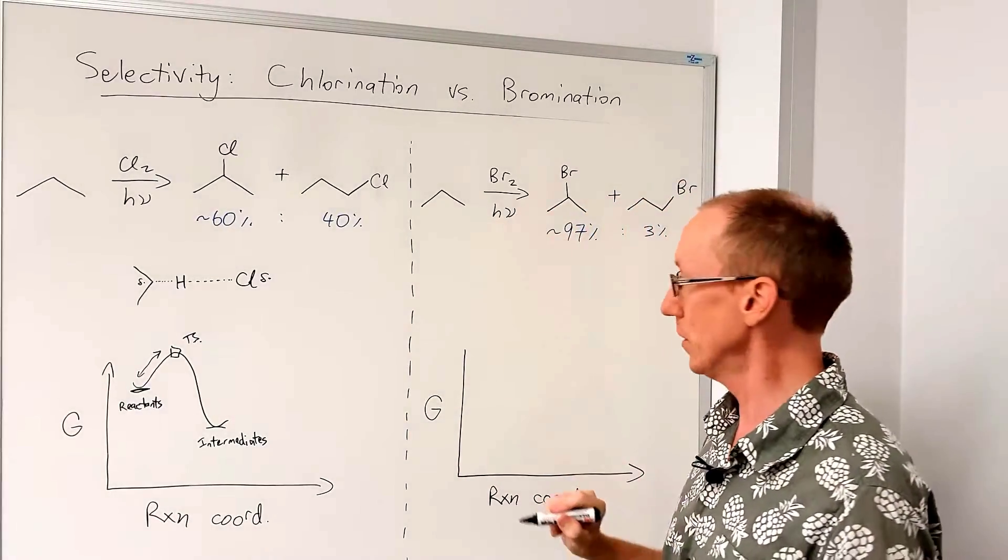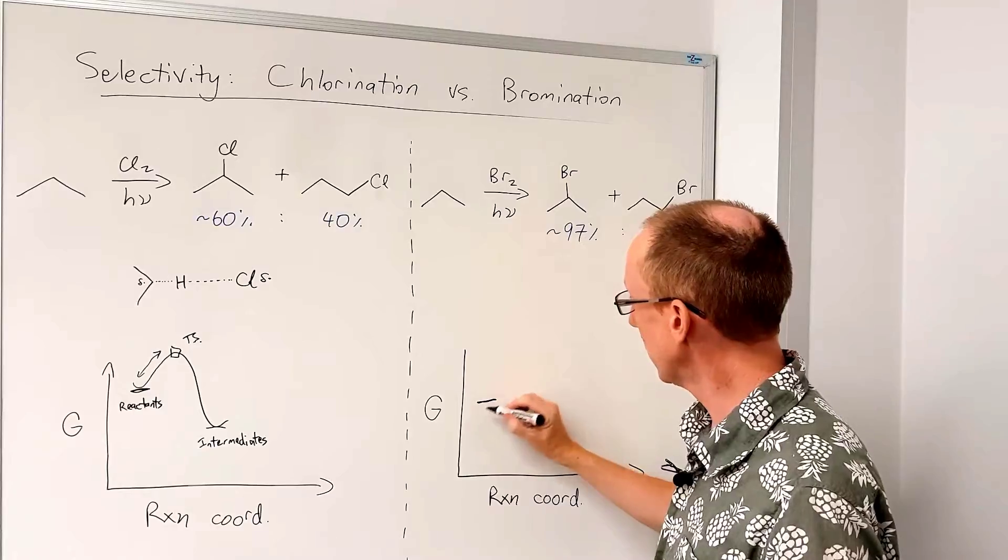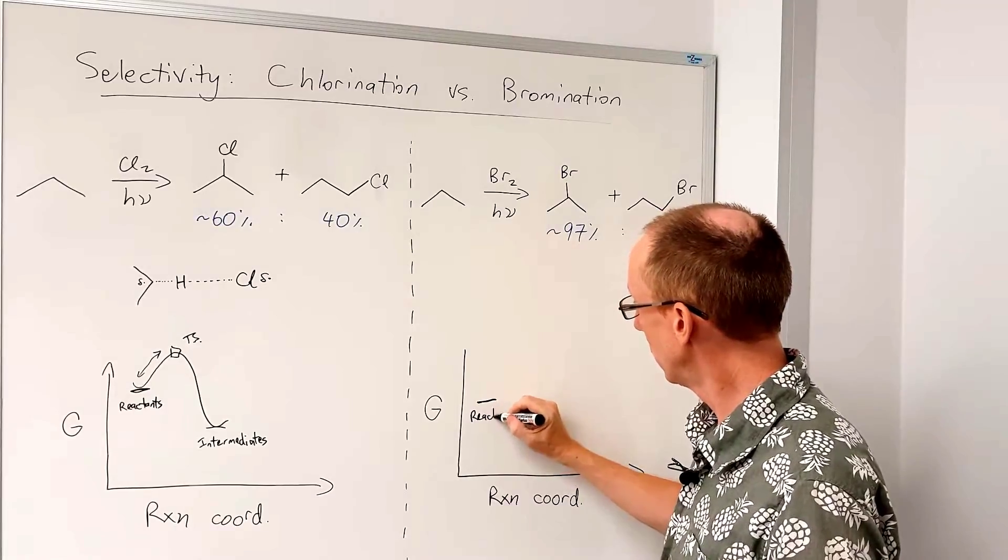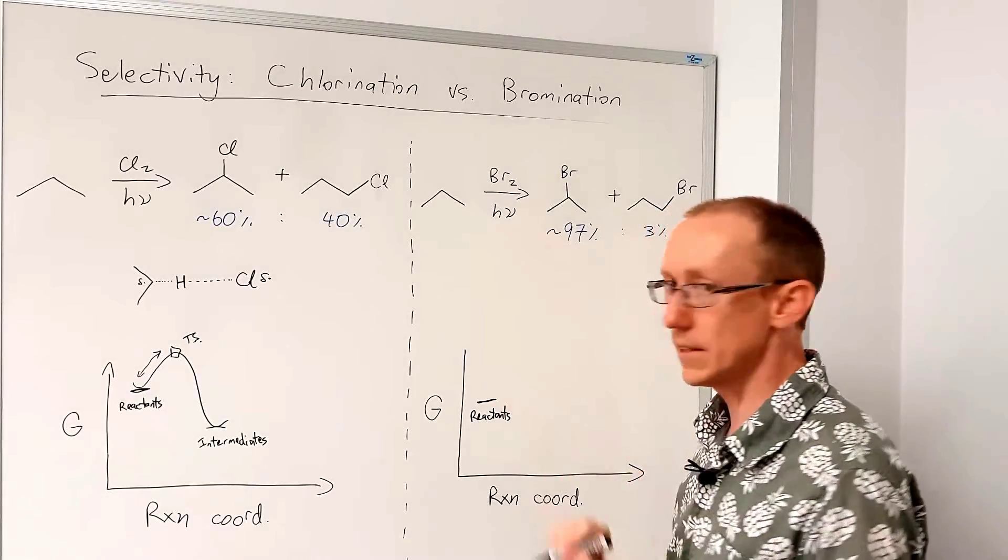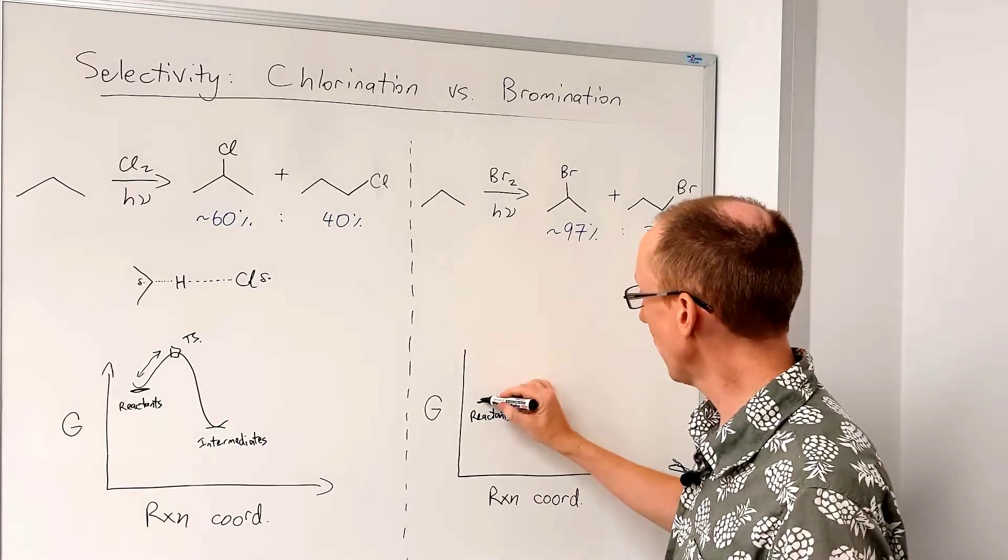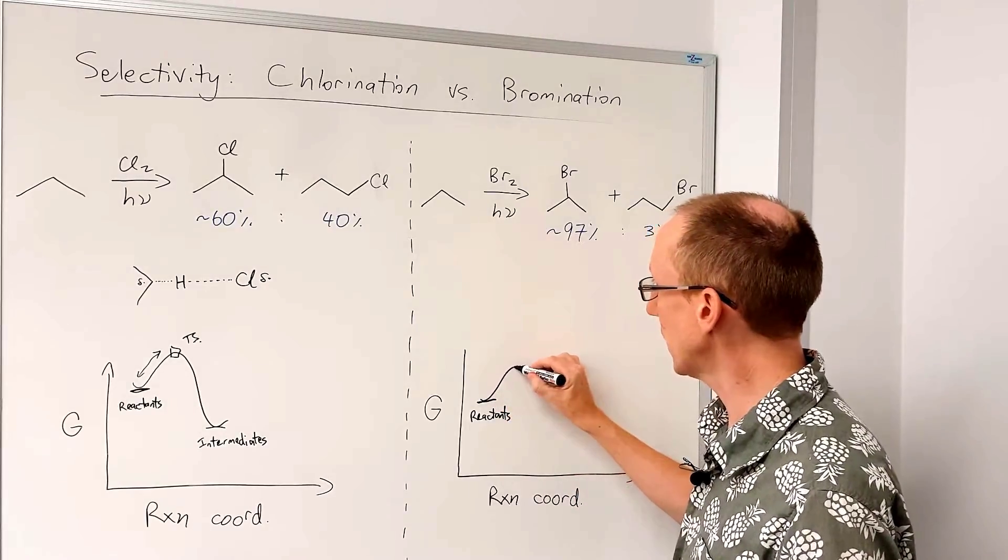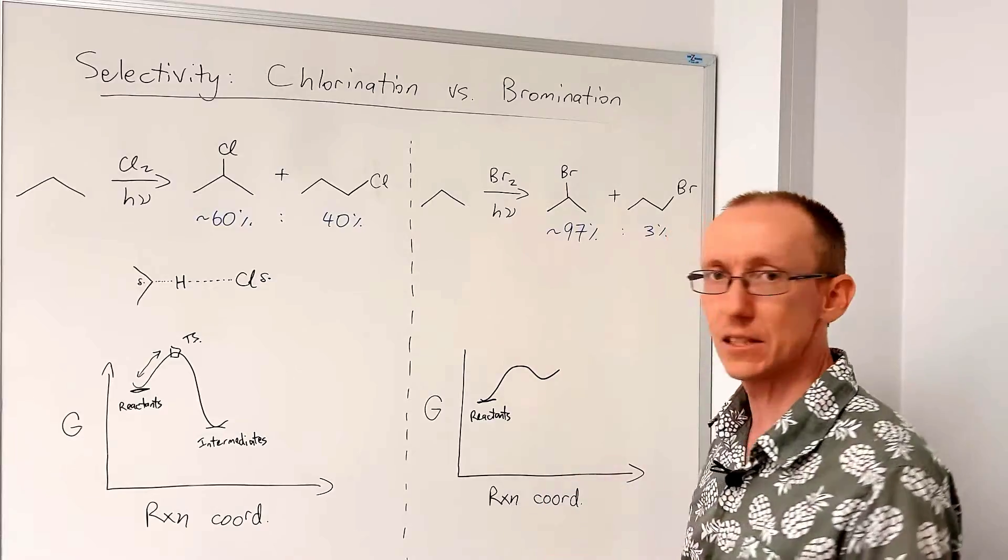If we look at the bromination, we're going to start here. There's our reactants. And we're going to go up through a transition state again. But then we're going to go down to intermediates that are much higher in energy than in the chlorine case.